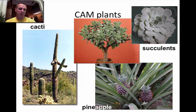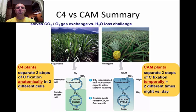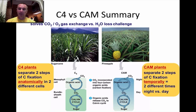Here are some pictures of CAM plants. As a side note, pineapples grow in a plant, not a tree. To summarize: C4 plants physically separate carbon fixation and the Calvin cycle into two different cell locations, while CAM plants do it at two different times of day — carbon fixation at night and the Calvin cycle during the daytime.